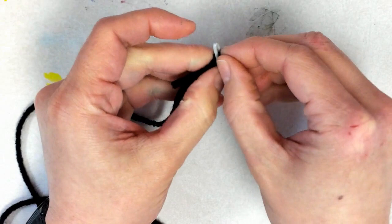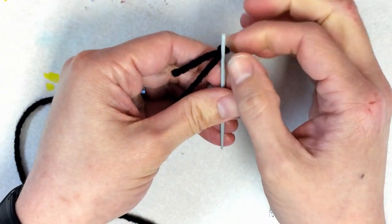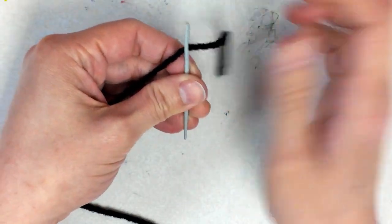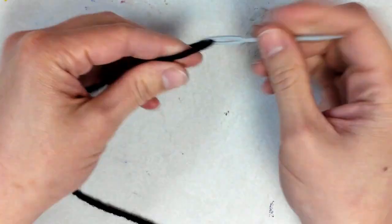Then I'll take my other finger, my other hand, and I will pull it through, just like that. So that's one way that I thread a needle.